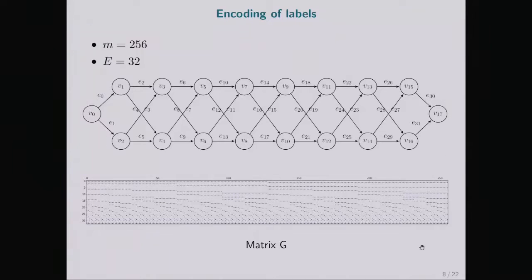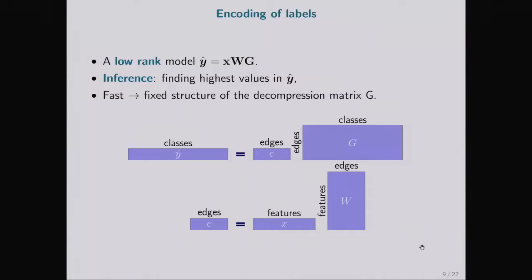All m paths can be stacked vertically to form a matrix G. The blue path you can see on the graph corresponds to the highlighted column. In this small example, the number of edges is bigger than the number of labels. But if the number of labels is bigger, the opposite is true, and we need to use fewer edges than labels.